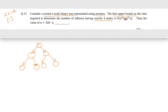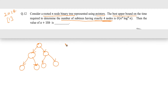We have to find the time complexity, and then we will be able to find the values of a and b, and then we have to give the answer as a plus 10b. The main question is: in a rooted binary tree represented using pointers, what is the time complexity for finding the number of subtrees having exactly four nodes?